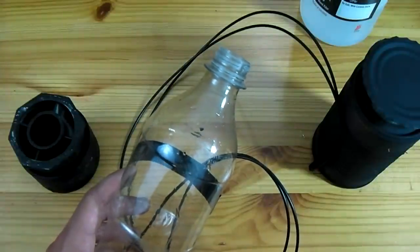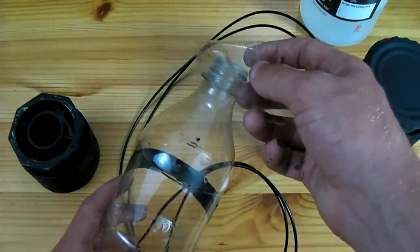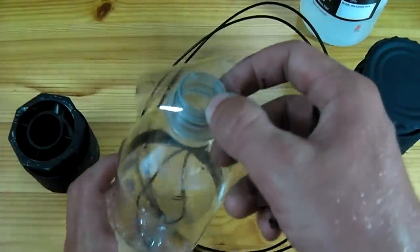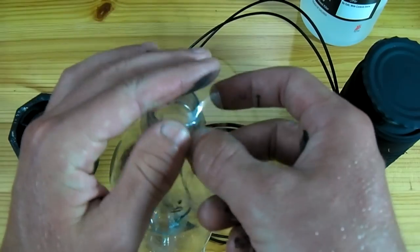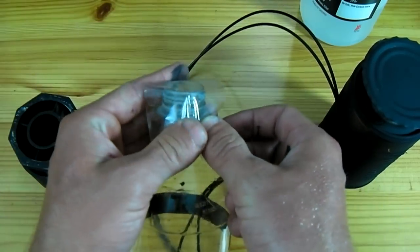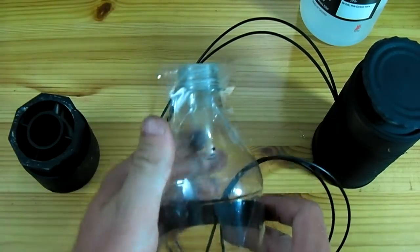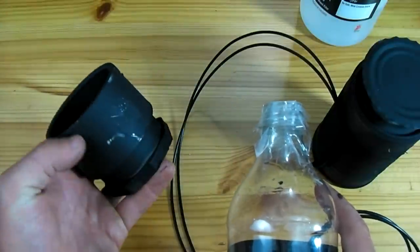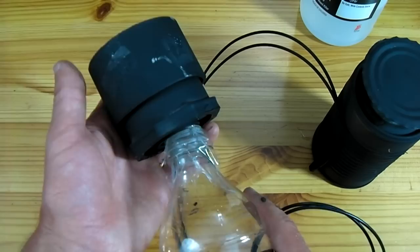The lid is then taped closed with one layer of clear packaging tape. This set of PVC fittings is now pressed down on top over the tape.